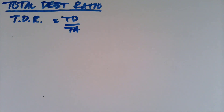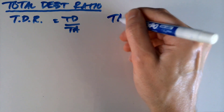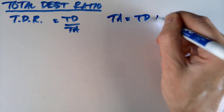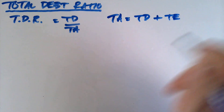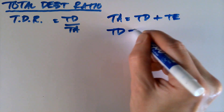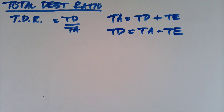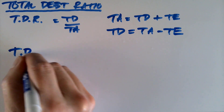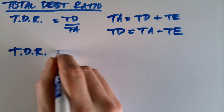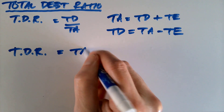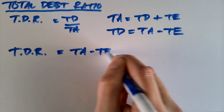Here is the simplest calculation for the total debt ratio: it's just total debt divided by total assets. We know that total assets equals total debt plus total equity. So we can rearrange that to say total debt equals total assets minus total equity. And we can make a substitution back into our formula — anywhere it says total debt, we put in total assets minus total equity.